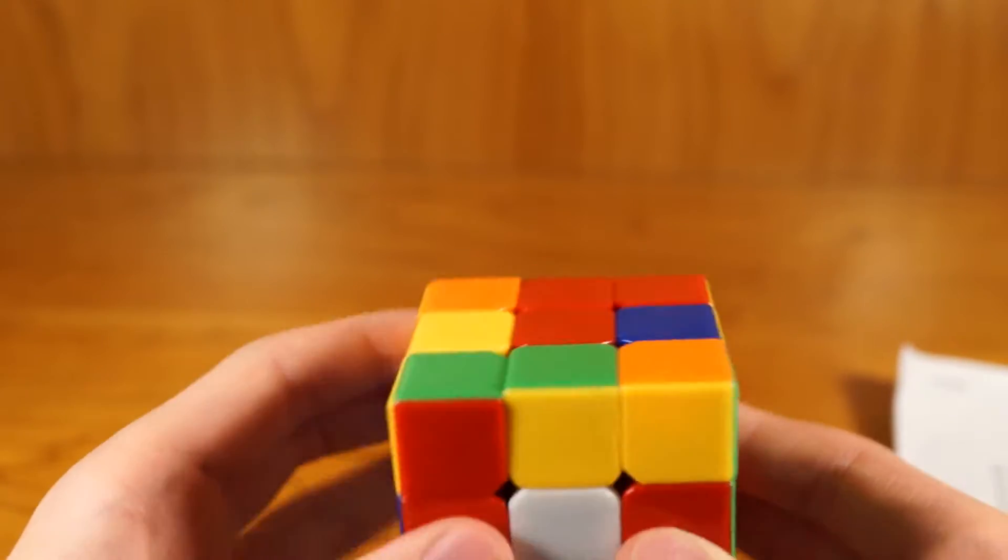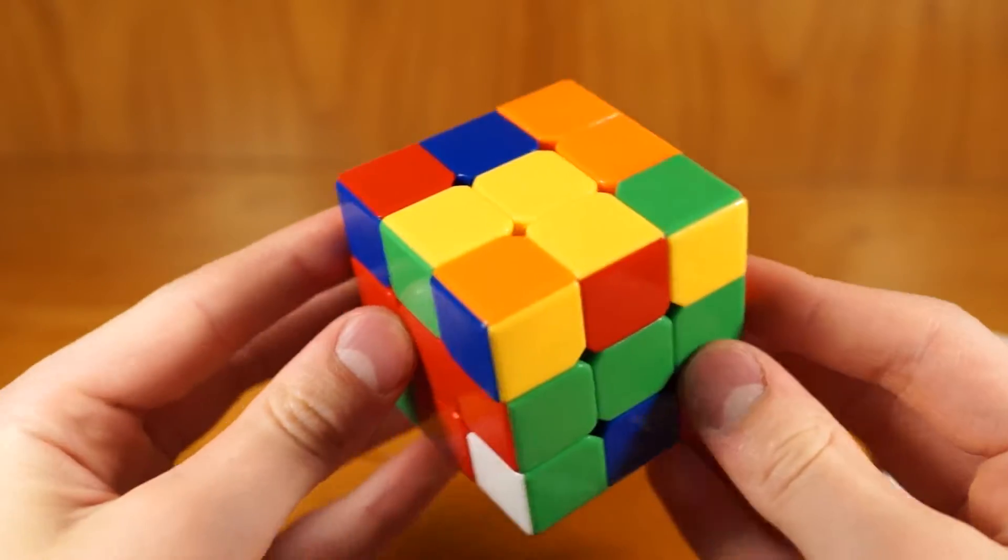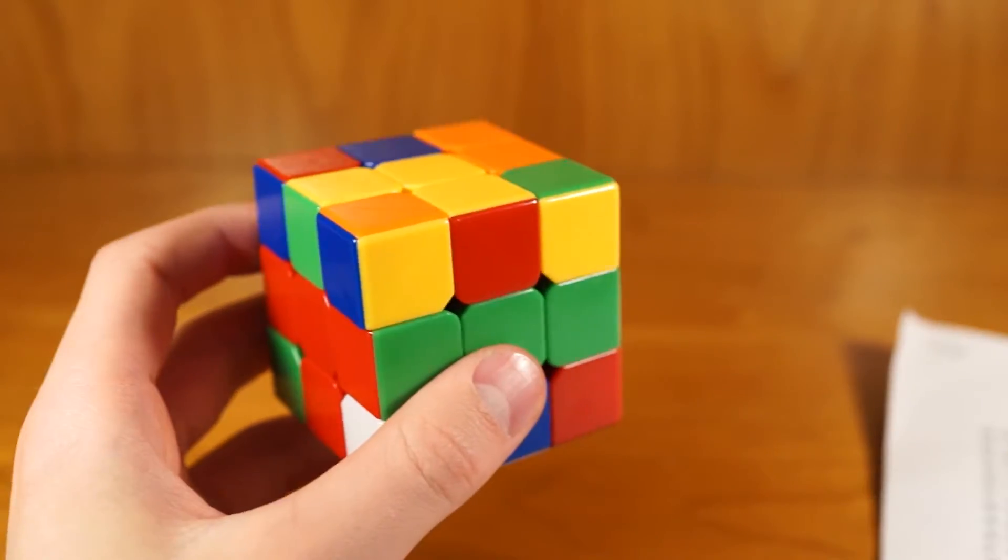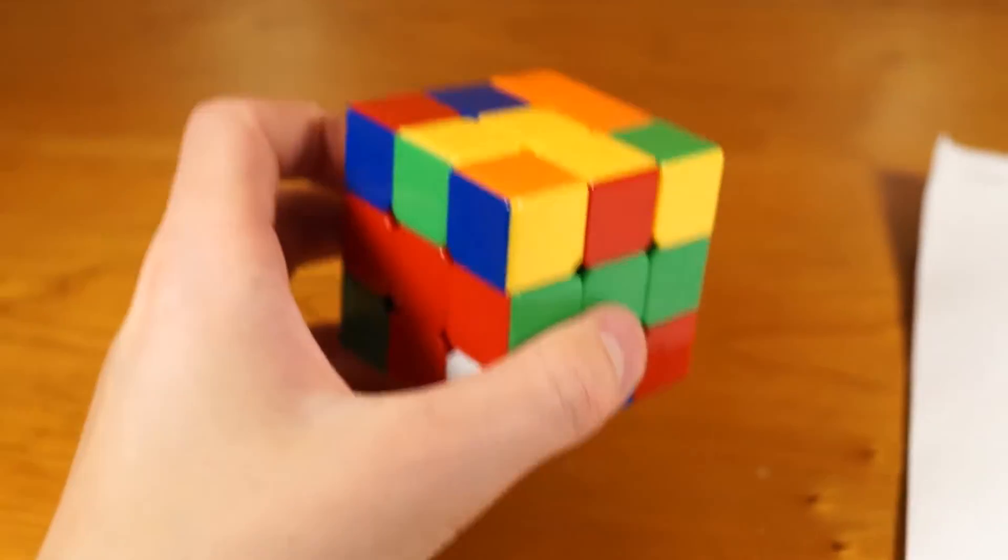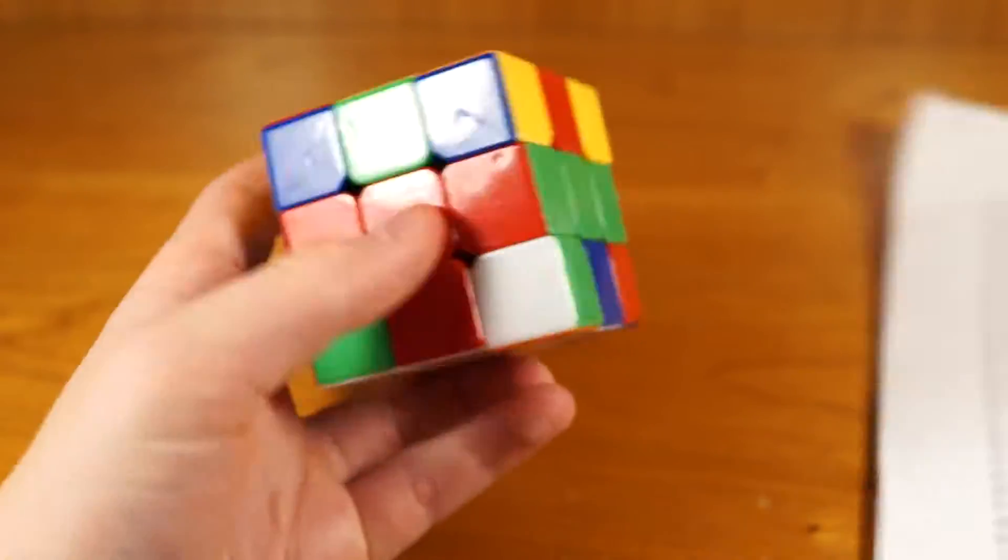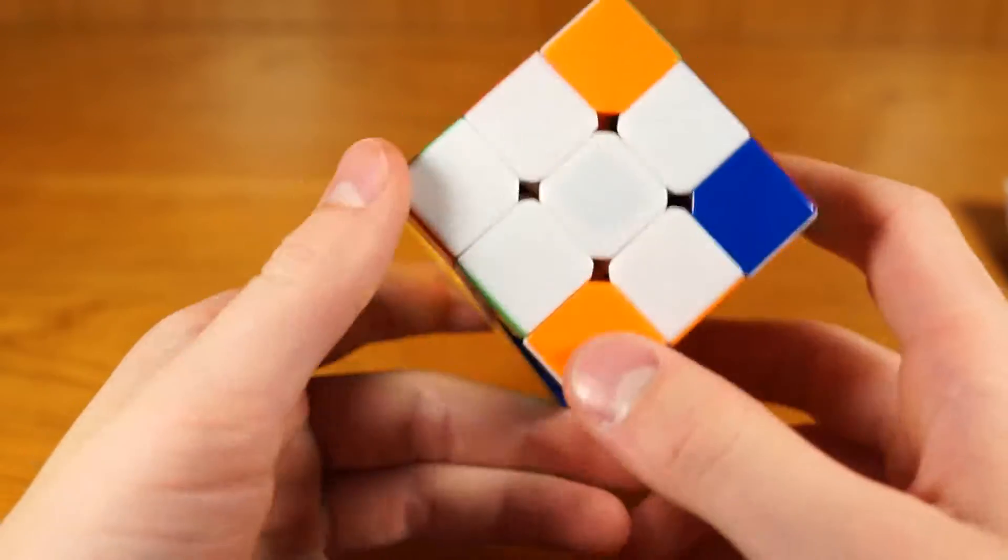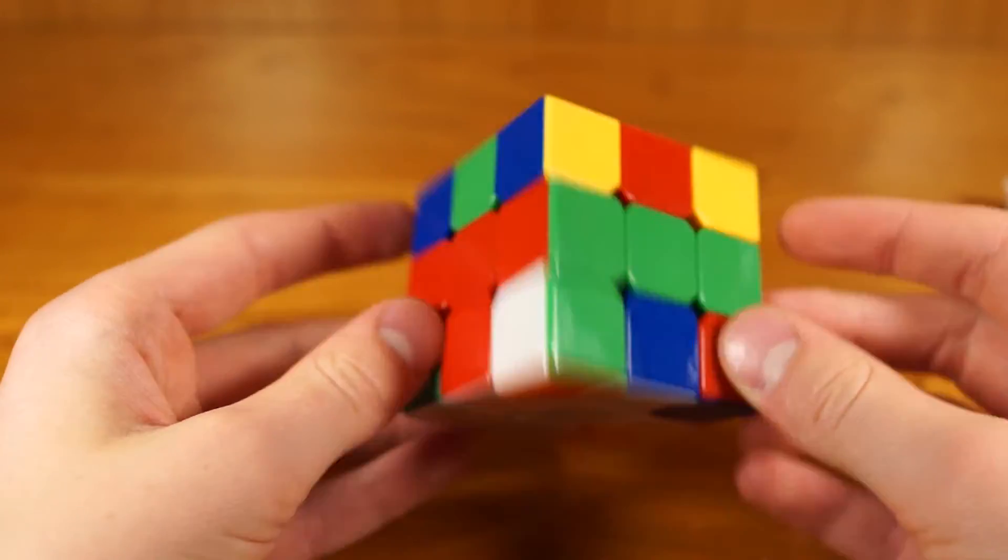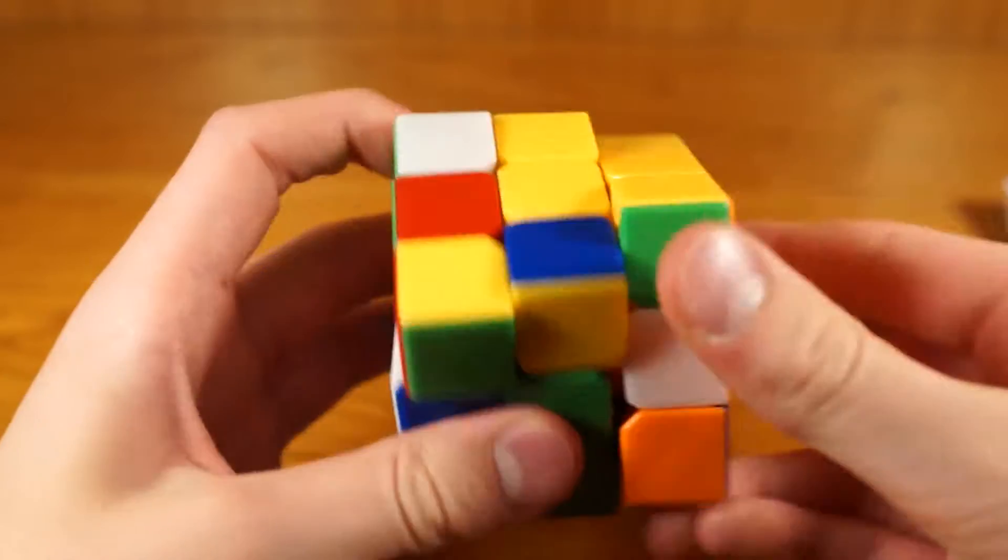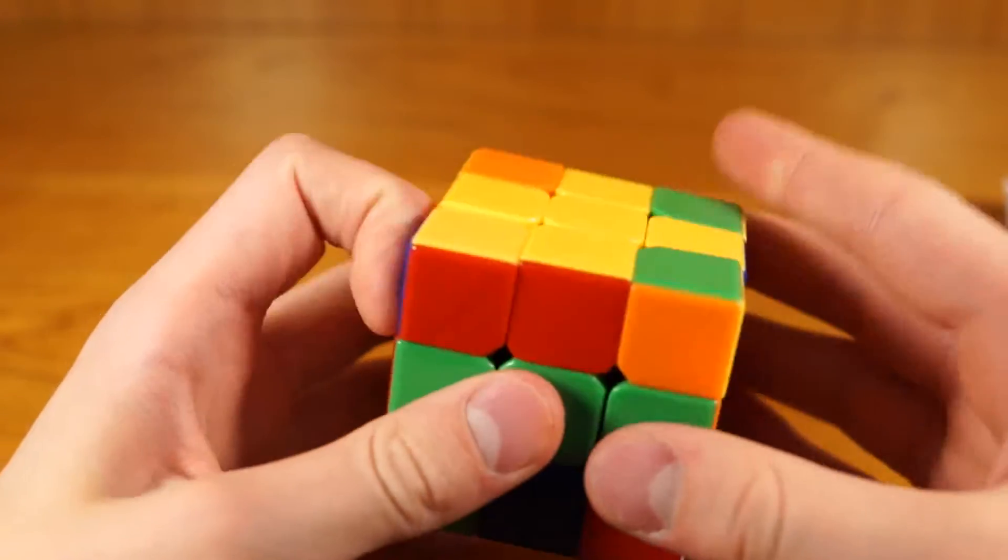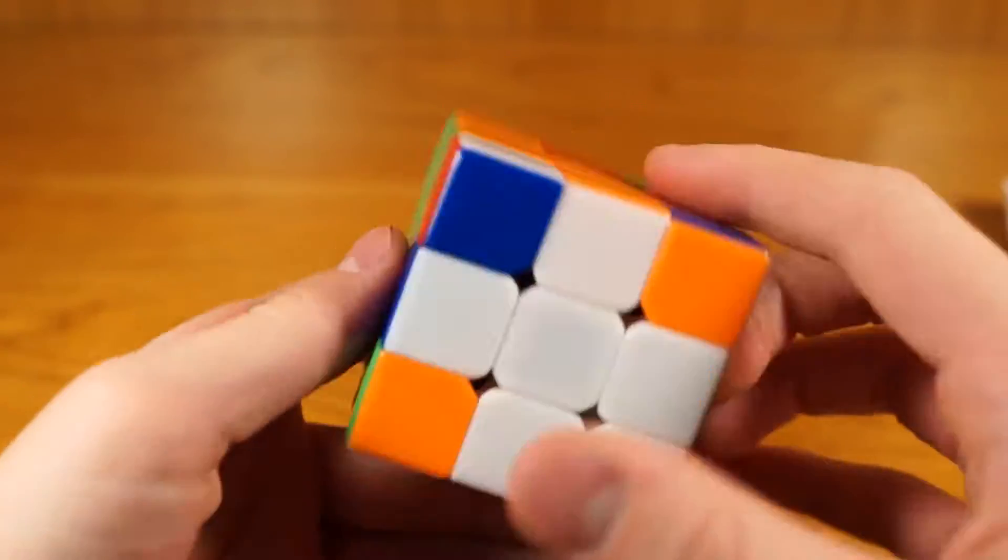Just do M' U2, M. And then boom. All your corners are, not corners, now your entire face is solved. This makes my life so much easier. Okay. So now, you know, OLL. I've run into this parity every single time I think I have.